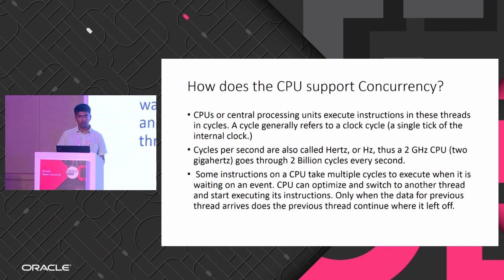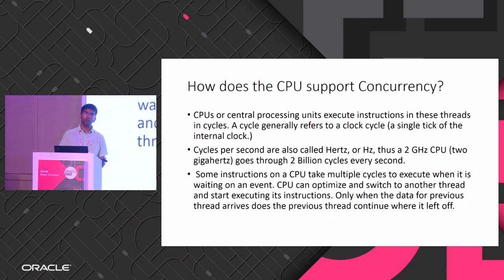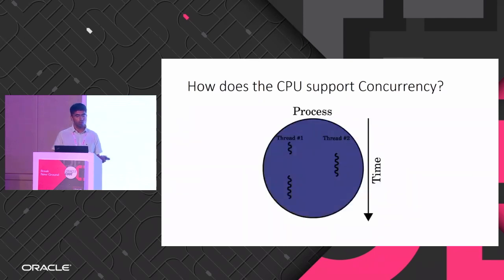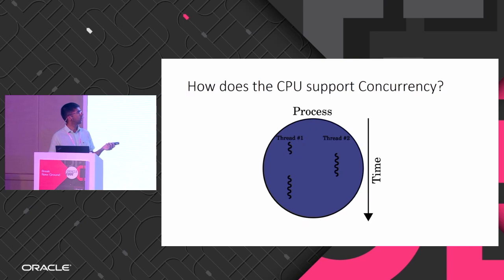When any task is picked up, it can be preempted — if it needs to wait for a resource, it can wait while another thread starts execution. This is how multi-threading happens: one thread is executing, then if thread 1 is waiting on some resource, thread 2 will start execution, and once thread 1 gets its resource back, it continues execution.